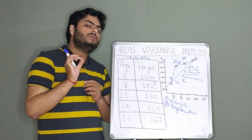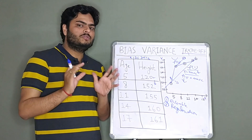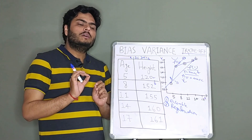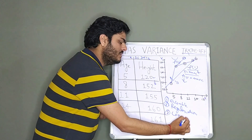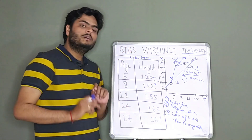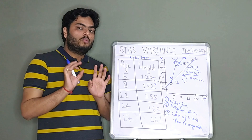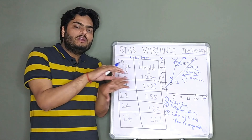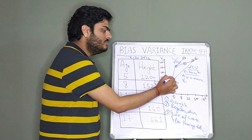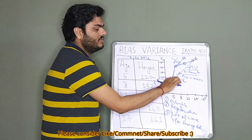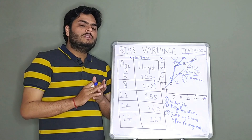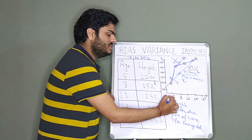If you forget all these concepts in an interview, just remember one point: any model that has a lot of love for the training data is a high variance model. For example, a decision tree tries to break your data into many branches so it can predict everything correctly — that is too much love for the training data. The straight line (f1) has less love for training data. Keep this in mind and you will never forget the concept of high bias and high variance.